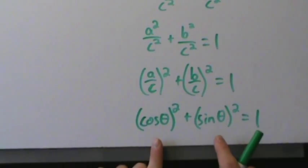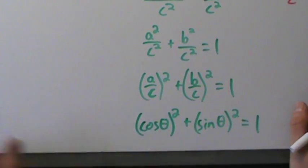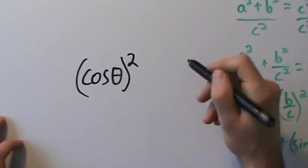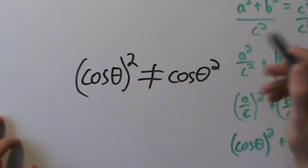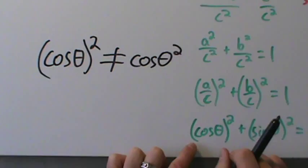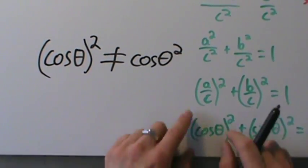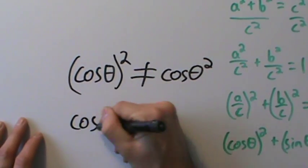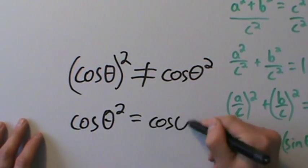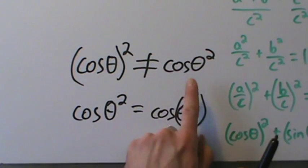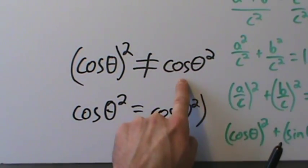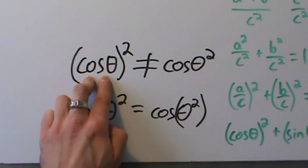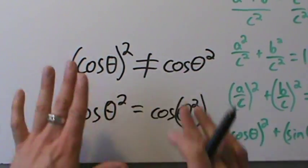Before we continue, I want to explain why we have to keep these parentheses. (a/c)² is the same thing as (cos θ)², and you want to be very careful: (cos θ)² is not the same thing as cos(θ²). When we substitute in cosine of theta you might be tempted to drop the parentheses, but we need them because there's a difference between squaring the cosine and squaring theta. If you say cos(θ²) that means square theta first and then take the cosine, but (cos θ)² means take the cosine first and then square it. They're very different — be very careful about that.